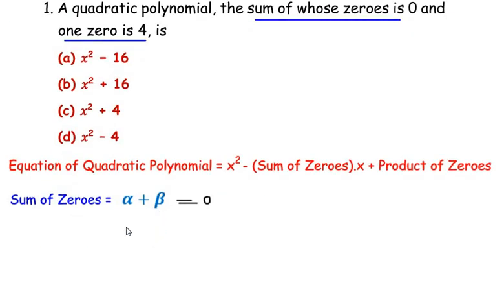So let us assume that alpha is given as four. So four plus beta is equal to zero. We can find out the value of beta now by sending four on the other side of equal to sign. So we get beta is equal to negative four. So we have alpha is equal to plus four and beta is equal to negative four.